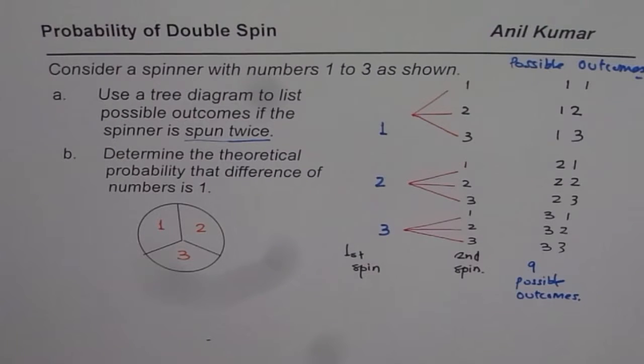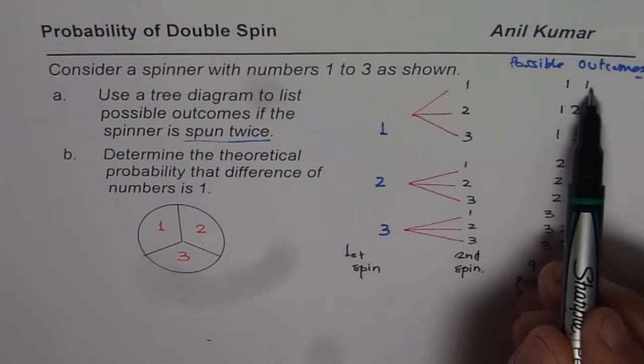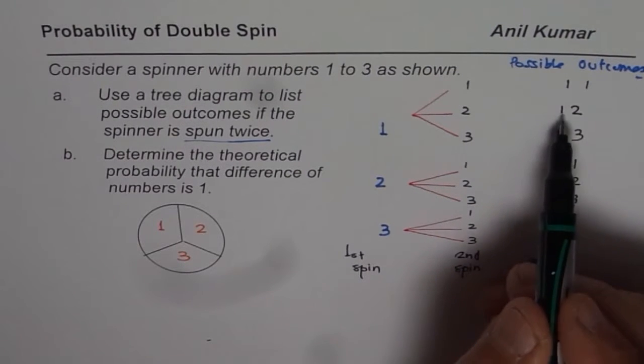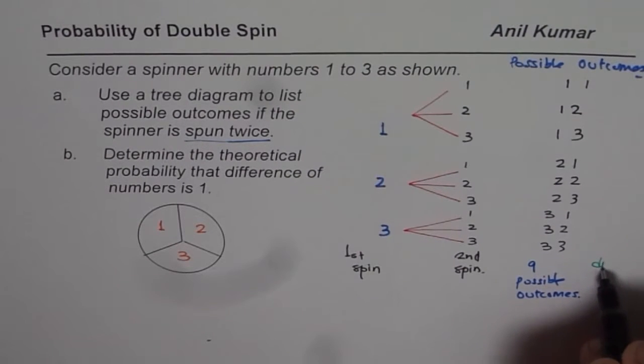Now let's look into the second part of the question. It says, determine the theoretical probability that difference of number is 1. In the two spins, we are looking for numbers where difference is 1. Now there are 9 possible outcomes. If I find difference between 1 and 1, it is going to be 0. Between 2 and 1, this difference is, let me write difference here.